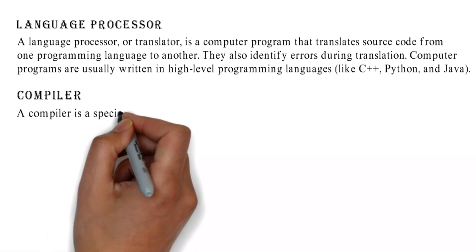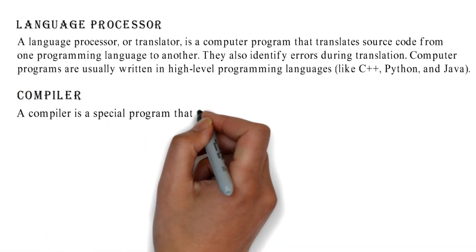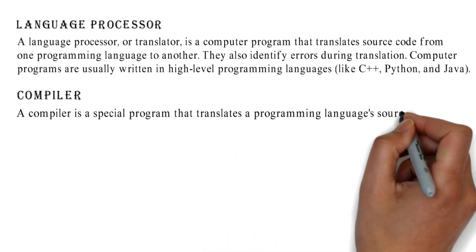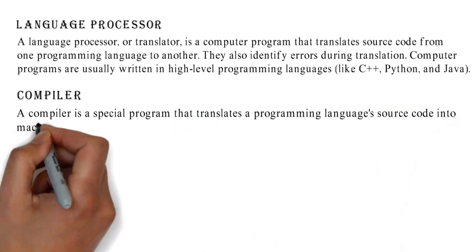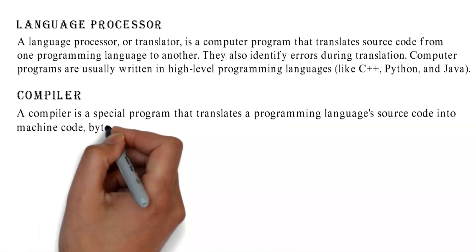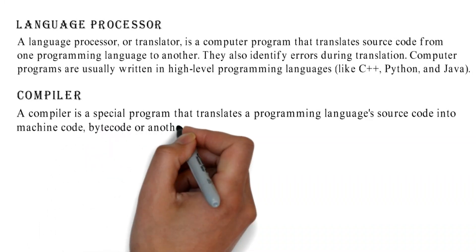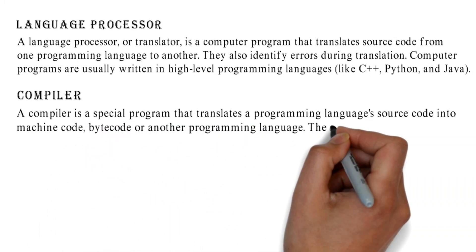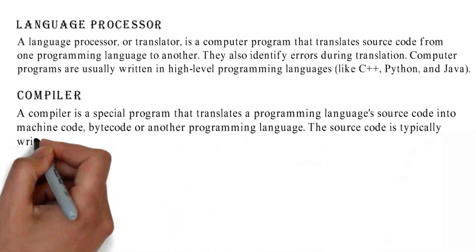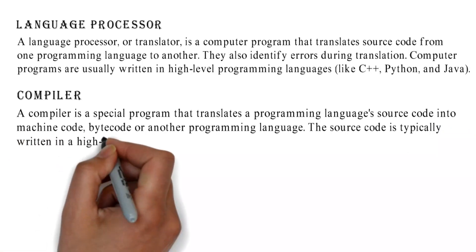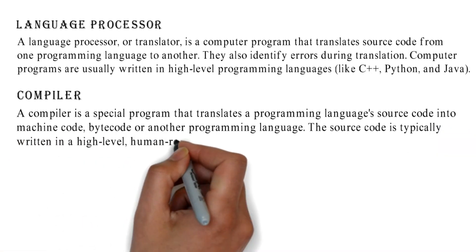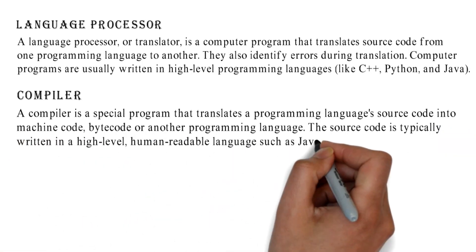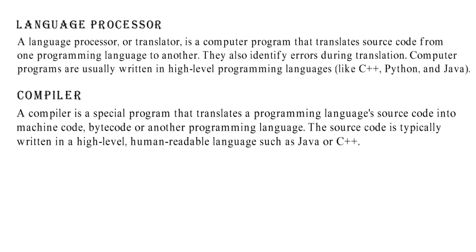A compiler is a special program that translates a programming language's source code into machine code, byte code, or another programming language. The source code is typically written in a high-level, human-readable language such as Java or C++.